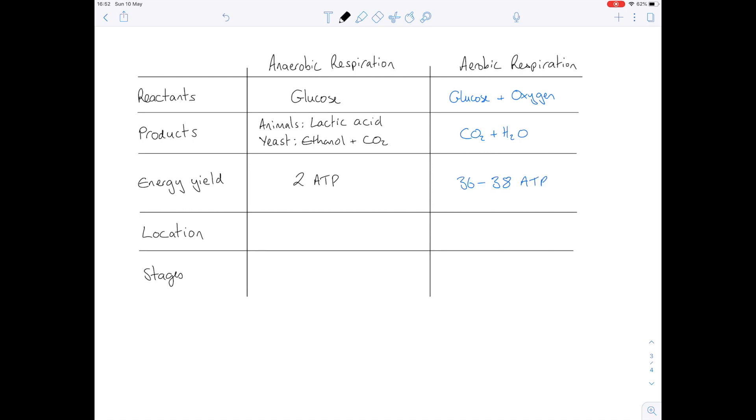Where are these processes taking place? Well anaerobic respiration is taking place in the cytosol, as this is where glycolysis is taking place. And aerobic respiration is taking place both in the cytosol and in the mitochondria.